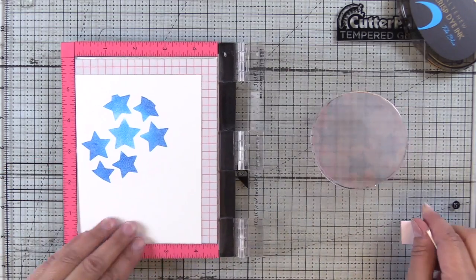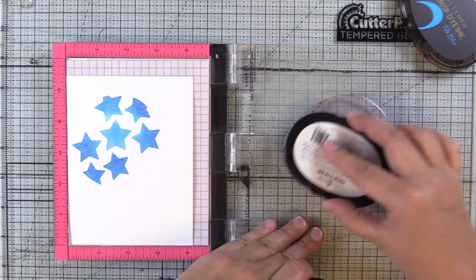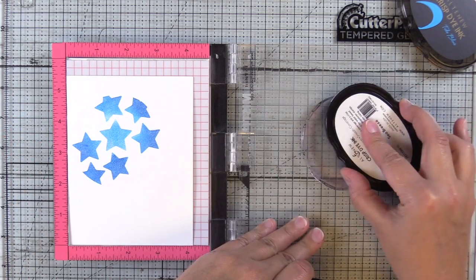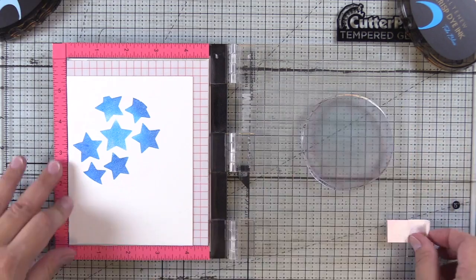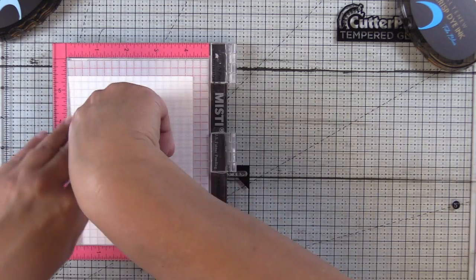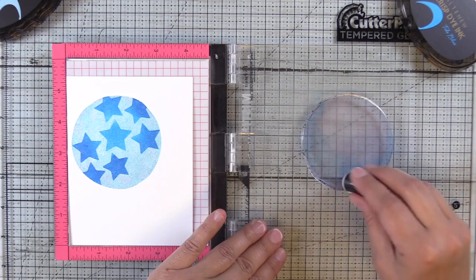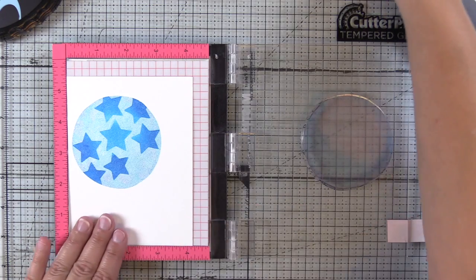Now if you were to do this same technique with a cover die, you wouldn't need to do this next technique of inking up your solid stamp in this way. My stars don't completely cover the area, so I'm going to take my lightest blue, ink up the solid stamp and stamp that around so that I get the full perimeter of that balloon.